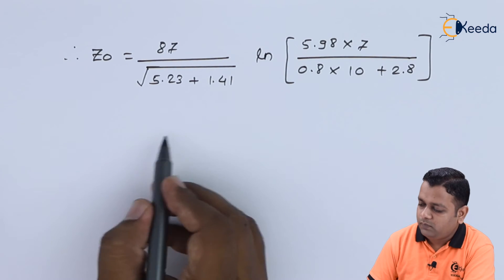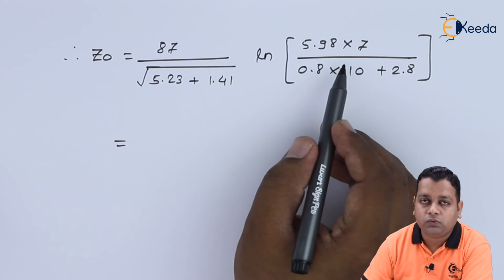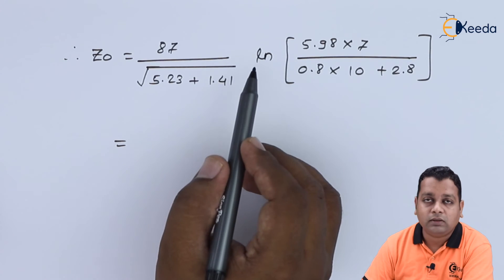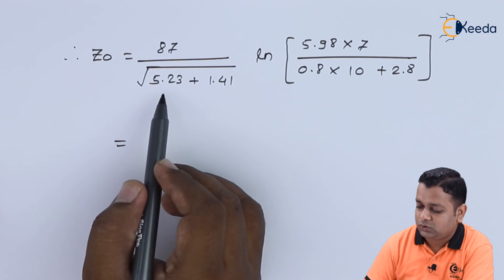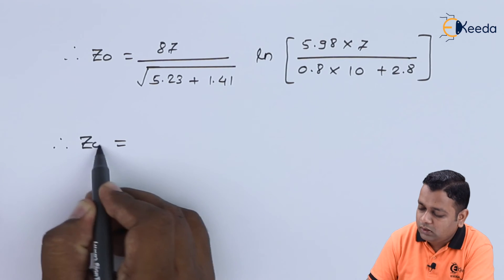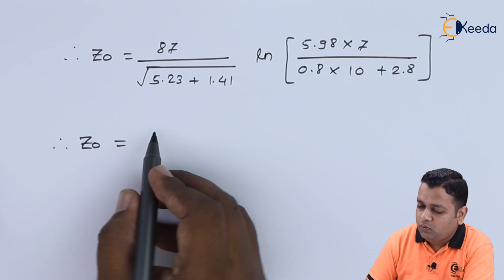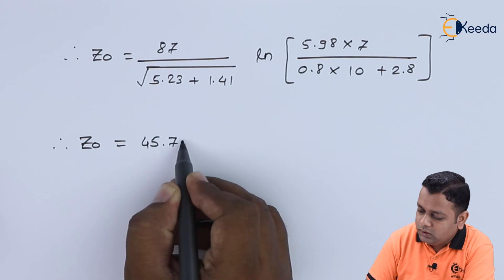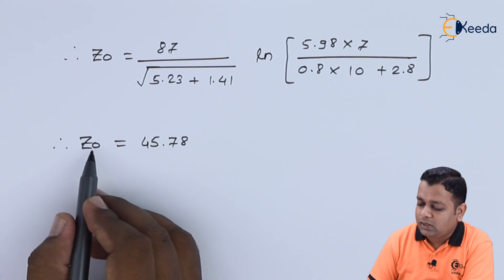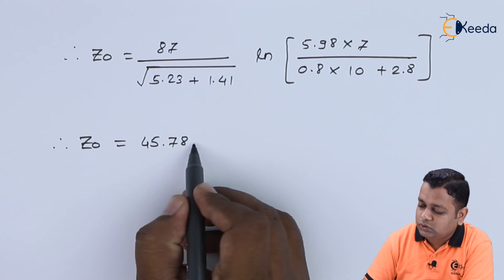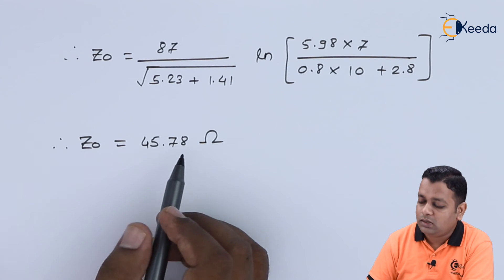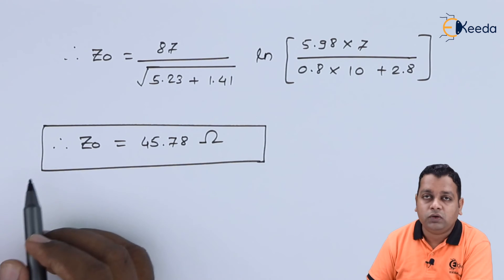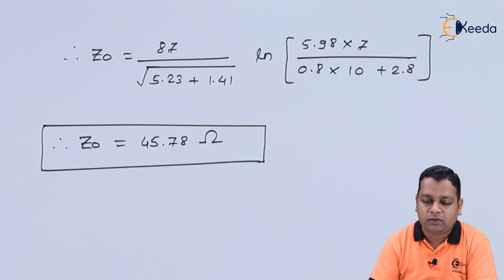We compute the ratio inside the natural logarithm, take the ln of that ratio, and multiply by the coefficient. The final calculated value of Z0 is 45.78 ohms. Since this is characteristic impedance, it is expressed in ohms.